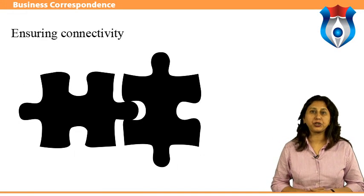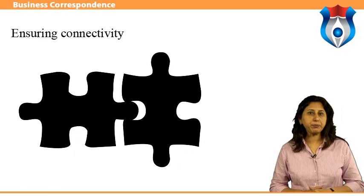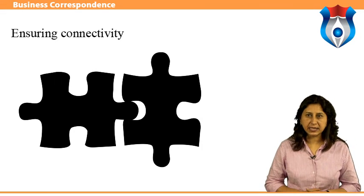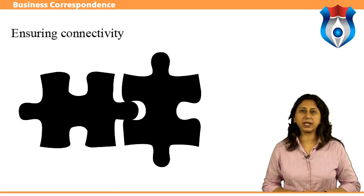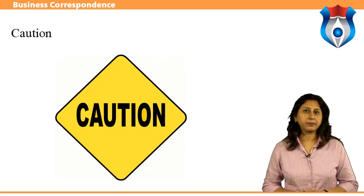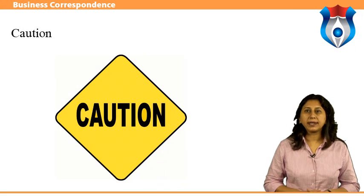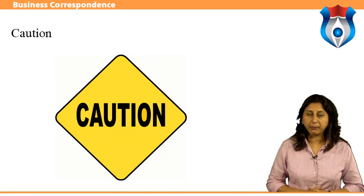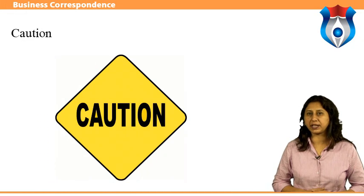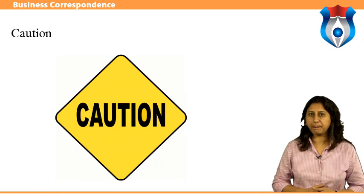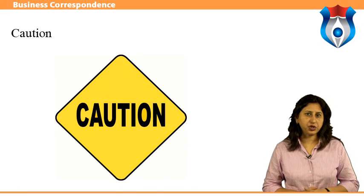Ensuring connectivity: the content that comprises a piece of writing should reflect fluency and should be connected through a logical flow of thought in order to prevent misinterpretation and catch the attention of the reader. Care should be taken to ensure that the flow is not brought about through a forced, deliberate use of connectives, as this makes the piece extremely uninteresting and artificial.